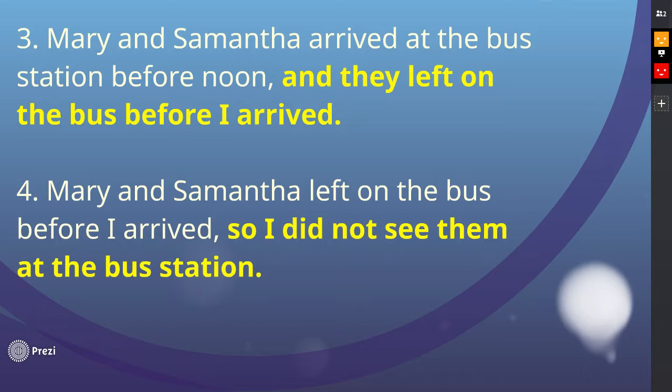So again — compound sentence: on each side of the comma and the conjunction, you would have a simple sentence that could stand on its own. You're just putting the comma and conjunction together to combine those two sentences. The words you can use — again, the seven of them — think of FANBOYS: for, and, nor, but, or, yet, so. You use those words with the comma, you can link those two together.